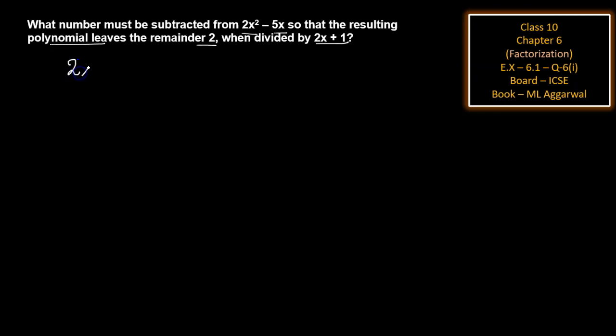we set 2x + 1 equal to 0, then x = -1/2. The given polynomial is 2x² - 5x.